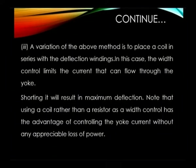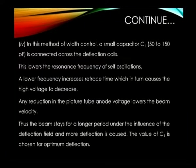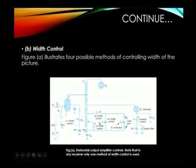The third width control method places a coil in series with the deflection winding; the width control limits the current that can flow through the yoke. Shorting it results in maximum deflection. Using a coil rather than a resistor as a width control has advantages because a coil more easily controls the yoke current, and coil is most preferred over a resistor yoke. The fourth width control method connects a small capacitor C1 of 50 to 150 picofarad across the deflection coils, which lowers the resonance frequency of the self-oscillator.